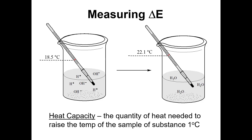So far, we've covered energy transfer through heat flow between a system and its surroundings. We also understand that exothermic means energy is given off and endothermic means energy is taken up. So the question is, how can we relate those concepts to a chemical reaction?